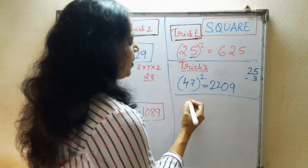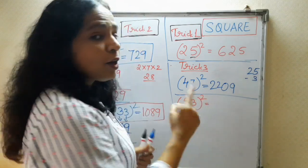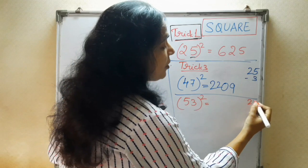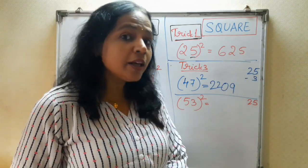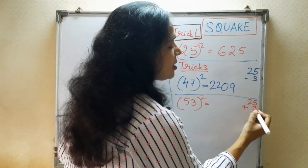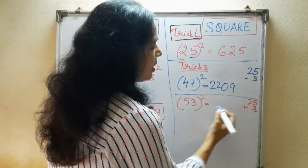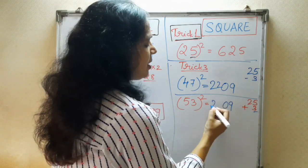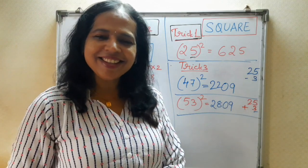Take one more example. 53 square. Here also, take first trick is 25. Keep it aside. Now, see here, how the more than 50 this number is. How much more? 3. So, I will write here plus 3. Now, write the square of this number. 3 is 0, 9. And, 25 plus 3 is 28. This is our answer. Isn't it easy? Very simple.